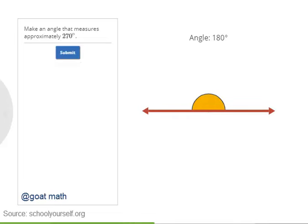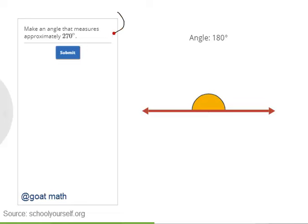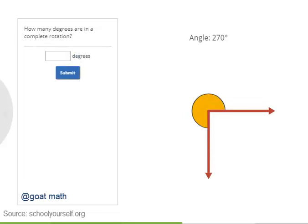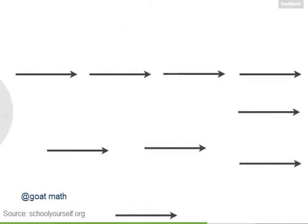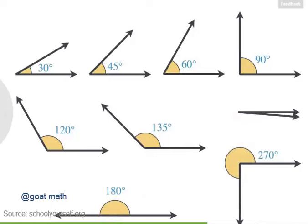A 180 degree angle is the angle between rays that point in opposite directions. You'll sometimes hear that 180 degrees is the angle in a straight line, because two rays pointing in opposite directions together make a straight line. Next, try making an even bigger angle — one that's approximately 270 degrees. So now, how many degrees are in a complete rotation, meaning you rotate this ray all the way around until it's back where it started? A 360 degree angle is a complete rotation. The bigger the angle, the more degrees are in it.